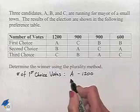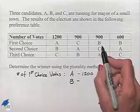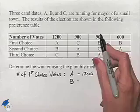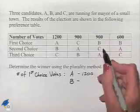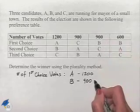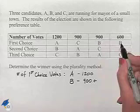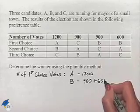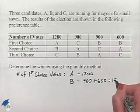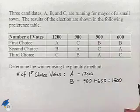Let's go to candidate B. Candidate B appears in the row where we're going to have 900 votes from the third column plus we have 600 votes from the last column. Adding those together gives candidate B 1,500 votes.